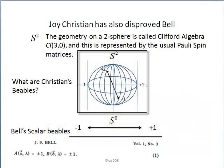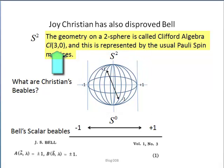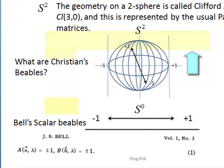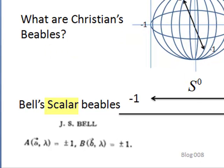It makes sense that the algebra on different spheres is different. When a plane flies polar routes, an S^2 sphere corresponds to Clifford algebra Cl(3,0), and this is represented by the Pauli spin matrices. Bell's beables are zero spheres or scalars. What are Christian's?